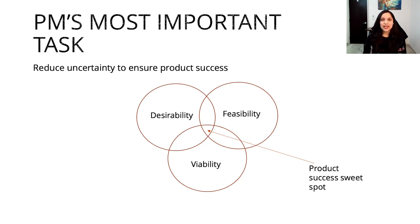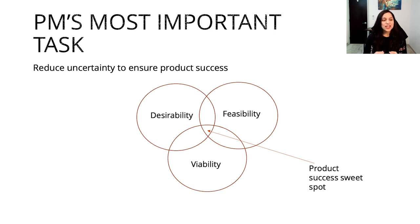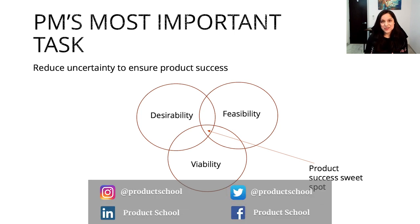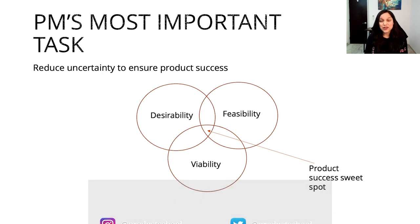Product desirability means that there are enough customers in the market that have a specific need or pain point that this product solves for. Hopefully, that pain point is recurrent, meaning customers will keep coming back to your product. Product feasibility means that you have the means, resources, time, budget, partnerships, expertise, and dependencies you need to build the product efficiently. And product viability means that at some point in the future, you'll be able to generate revenue streams and profit for your business.